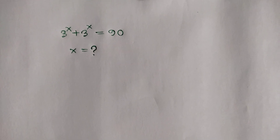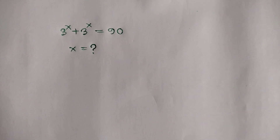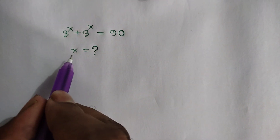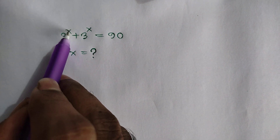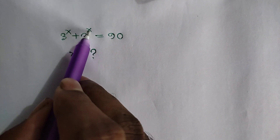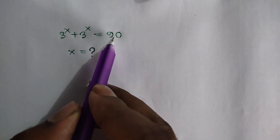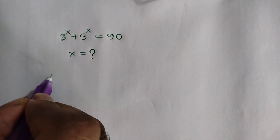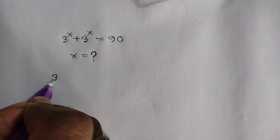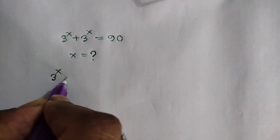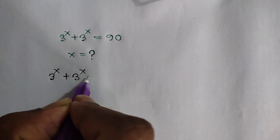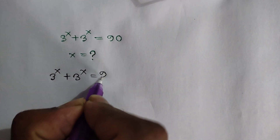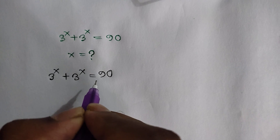Hi everyone. In this video I am going to show how to find the value of x where 3 to the power x plus 3 to the power x is equal to 90. We have given 3 to the power x plus 3 to the power x is equal to 90.